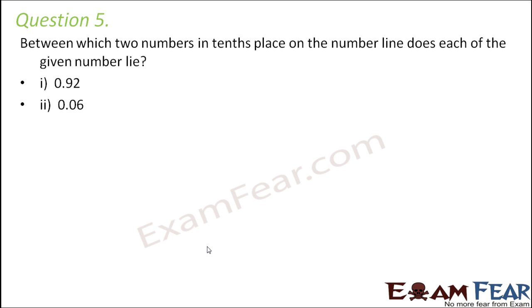Question number five. Between which two numbers in tenths place on the number line does each of the given number lie? So the first number that we are given is 0.92. Now 0.92 can be written as 92 by 100. First we write the number without the decimal point. And in the denominator, we put as many zeros as there are digits after the decimal point. So there are two digits after decimal point.